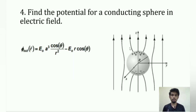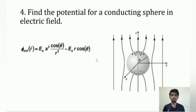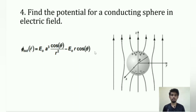The next question was from electrodynamics: given a conducting sphere placed in a uniform electric field, calculate the potential at any random point. This is a well-known problem solved in Griffiths' electrodynamics textbook. The solution comes from Laplace's equation and involves complicated algebra. I got a bit lost in the algebra and the panel helped me out.